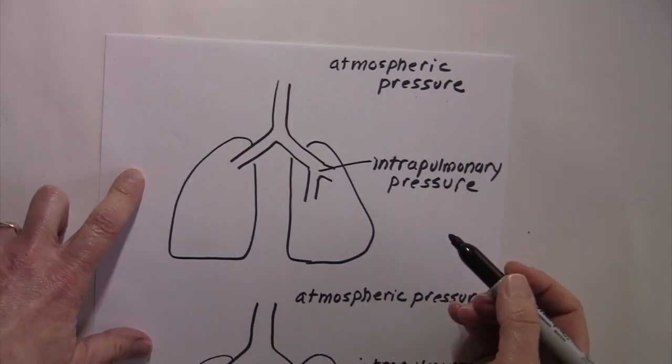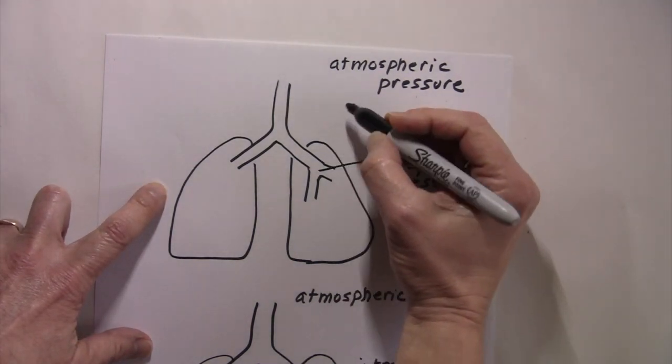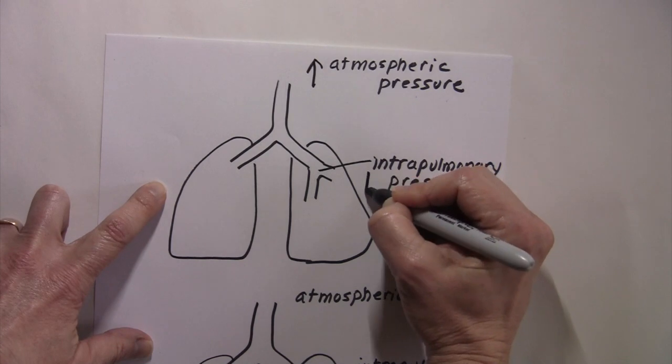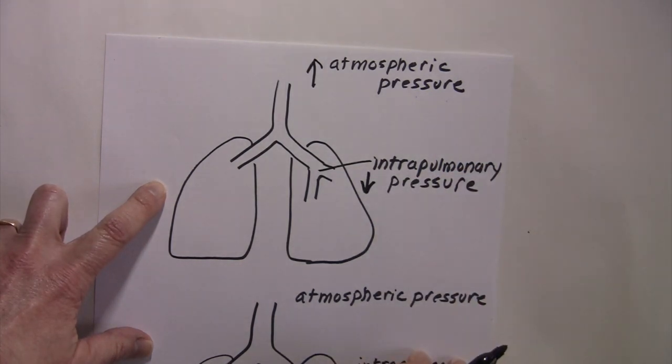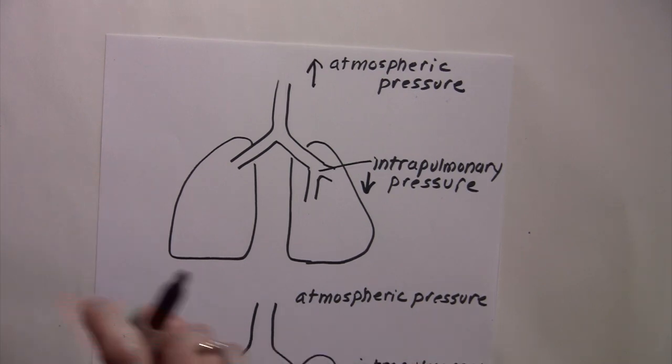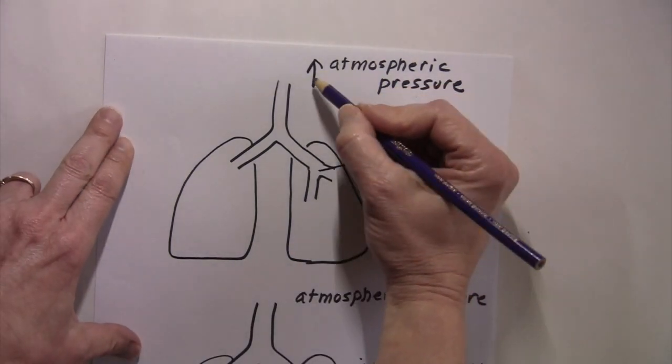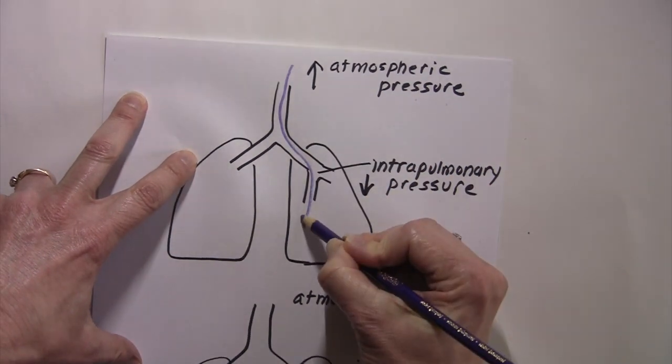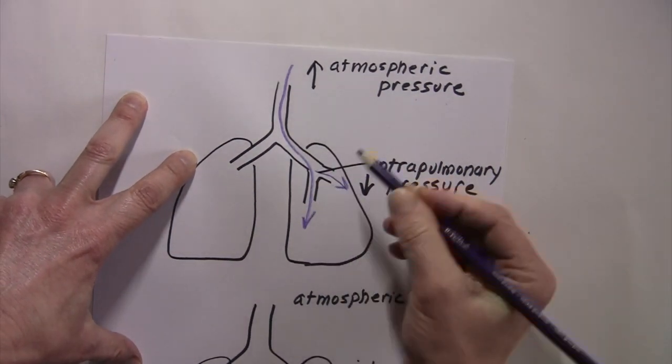So if the atmospheric pressure was higher than the intrapulmonary pressure, which way do you think gas will move? Hopefully you're thinking that gas is going to move from the area of high, move through the conducting passageways into the area of low, right? That's inhalation.